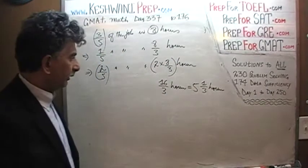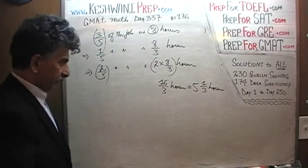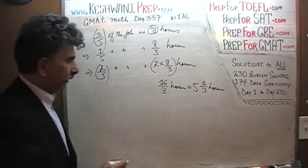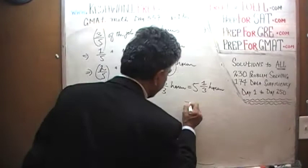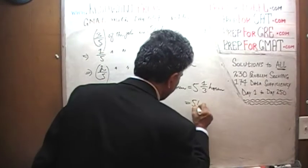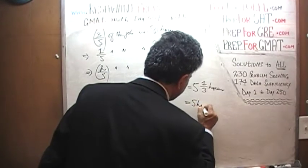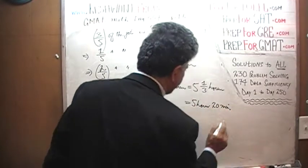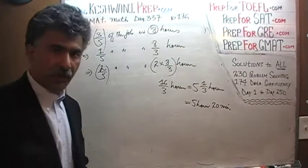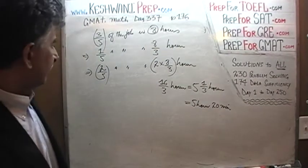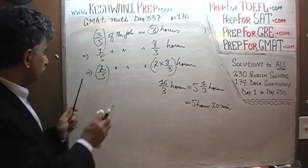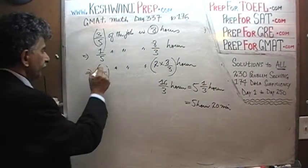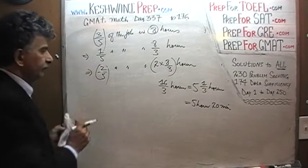Two times eight over three equals sixteen over three, which is the same as five and one-third hours. Five and one-third hours — a third of an hour is twenty minutes — so that's five hours and twenty minutes. That's it.